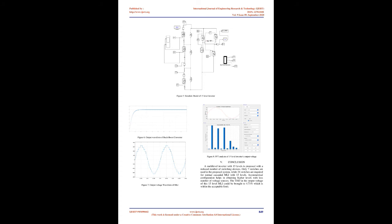Figure 3 shows the overall block diagram of the system. As the asymmetrical MLI requires sources of different voltage levels, a number of solar PV panels can be connected in series as per the output voltage requirement. Since the output voltage of solar PV depends on solar radiation, a buck-boost converter can be used to obtain a constant output voltage. To obtain 15 levels using the proposed topology, three different voltage levels are required, and accordingly three buck-boost converters are needed.